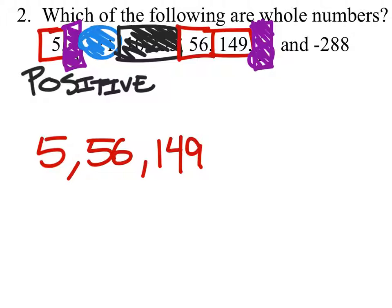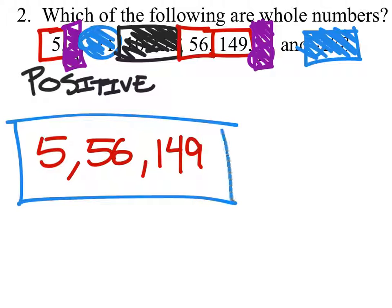And finally, negative 288 has a negative, so it cannot be a whole number. And our answer for this one is just 5, 56, and 149.